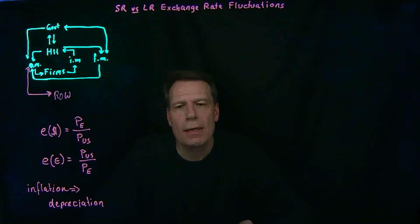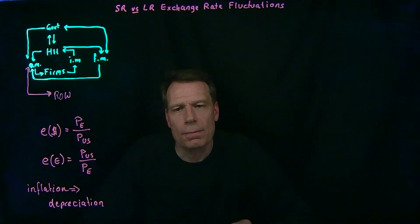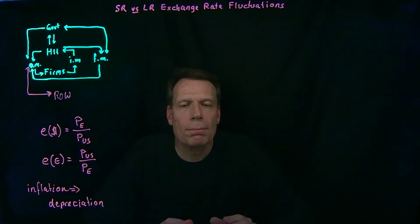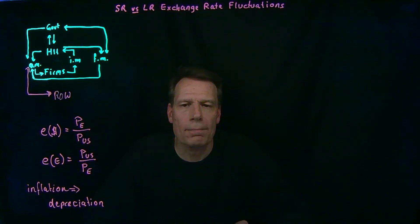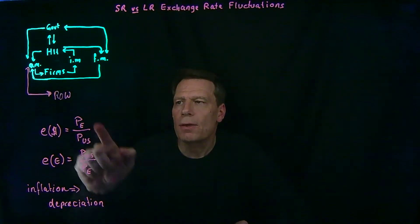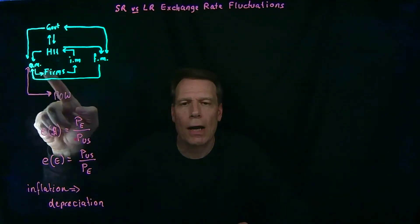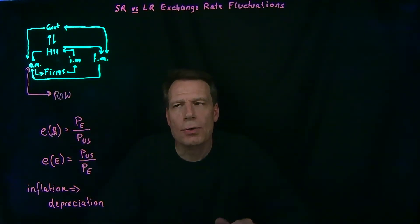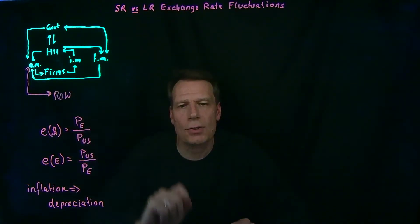Short-run exchange rate fluctuations must come from somewhere else — the one remaining place we haven't filled out in the circular flow diagram. The rest of the world doesn't just interact with us through output markets; it also interacts with us through our financial markets.